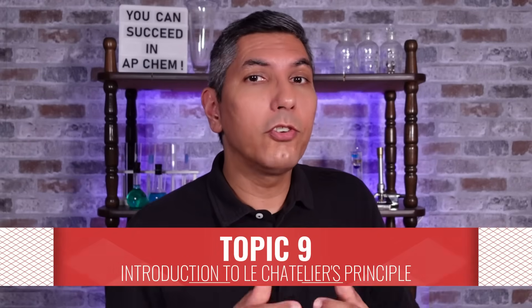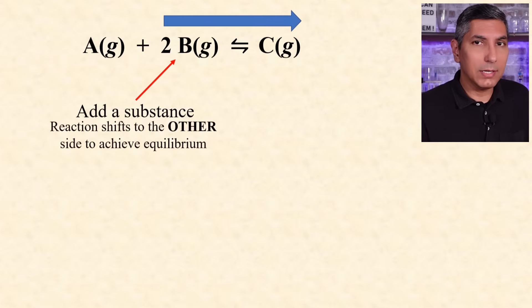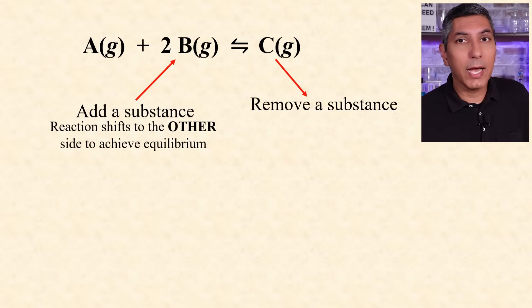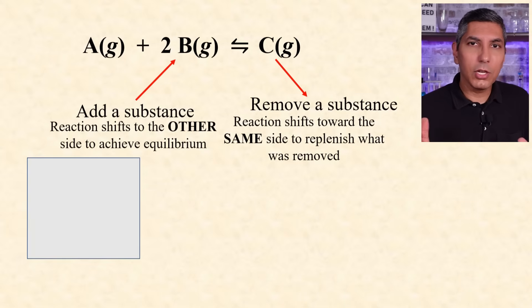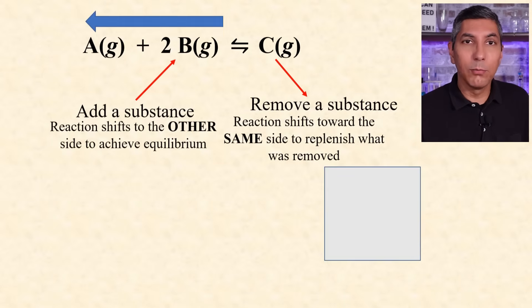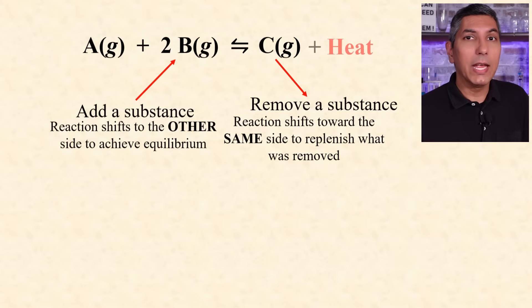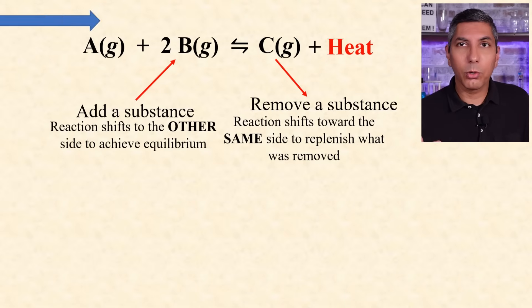If we have a system at equilibrium, and we disturb that system, the system will readjust itself to get back to equilibrium. So, if we add a substance, that substance will react with something on its side of the equation, and the opposite side of the reaction will increase, decreasing the side to which you added the substance. And, if you take something away, the other side will react, causing those concentrations to decrease, and the side on which you remove the substance will increase. If you decrease the volume, the equilibrium shifts to the side that has fewer moles of gas. And, if you increase the volume, it shifts toward the side that has more moles of gas.